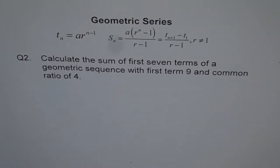Question 2. Calculate the sum of first 7 terms of a geometric sequence with first term 9 and common ratio of 4.